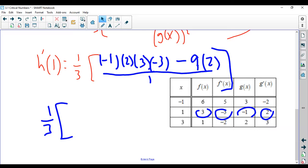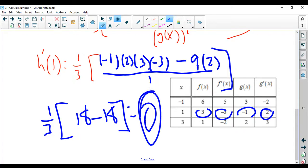But we have 1 third times 3 times 3 is 9, times 2 is 18. Minus 9 times 2 is 18. This turns out to be 0. That's surprising. So that's it.